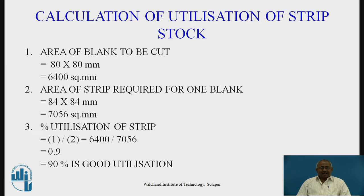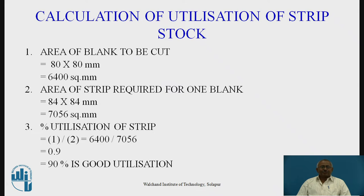After strip layout has been decided, the next part is the calculation of utilization of strip stock. For this calculation, we have to find the area of the blank to be cut. Our component has a size of 80 mm by 80 mm square, so the area of the blank to be cut is 80 × 80 = 6400 mm².